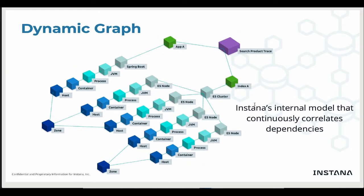You can think of the dynamic graph as a model of your application that understands all the physical and logical dependencies of components such as hosts, containers, processes, JVMs, Node.js applications, Python applications, MySQL databases, Cassandra nodes, Elasticsearch nodes, etc. The graph also includes logical components such as traces, applications, services, clusters, and tablespaces.